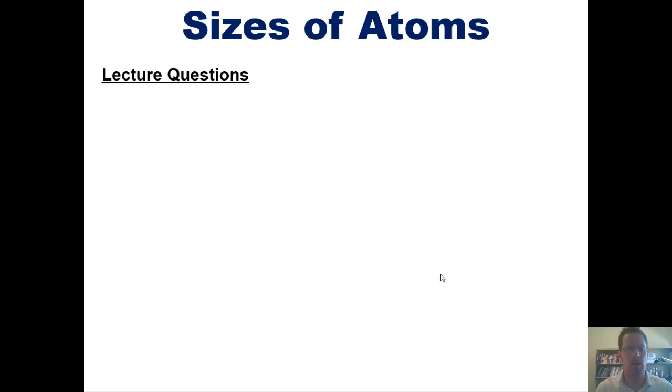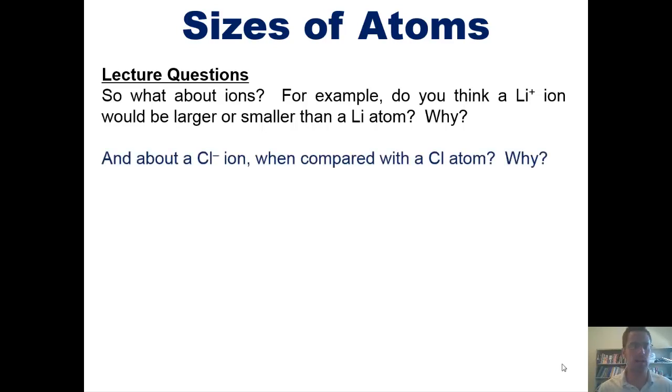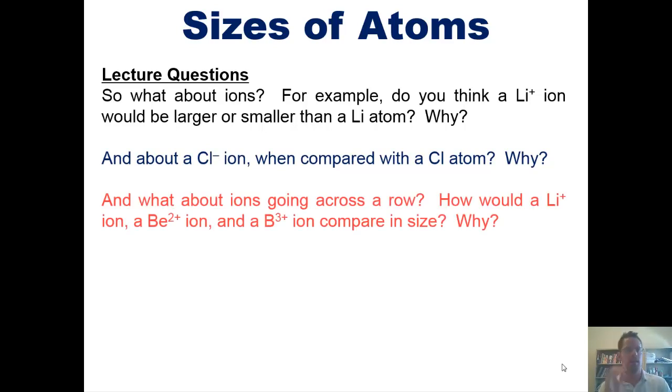This begs the question, what about ions? For example, do you think a lithium cation would be larger or smaller than a lithium atom? And why? And what about a chloride ion when compared to a neutral chlorine atom? And why? And what about ions going across a row? For example, how would a lithium cation compare to a beryllium 2+ cation and compare to a boron 3+ cation in size? Why?